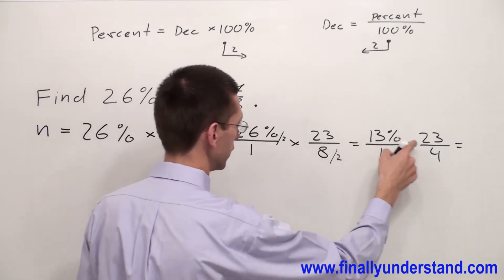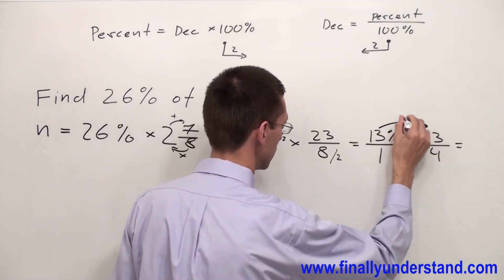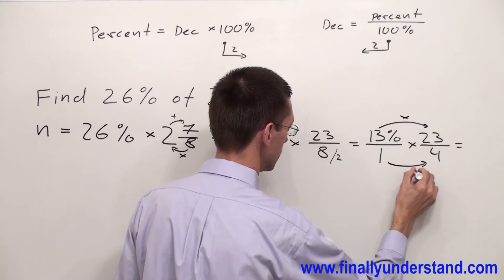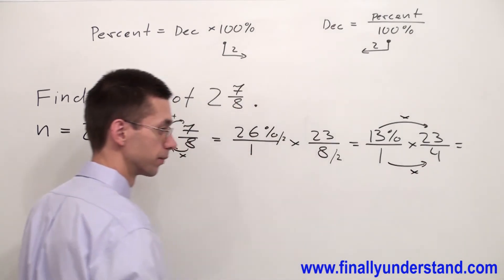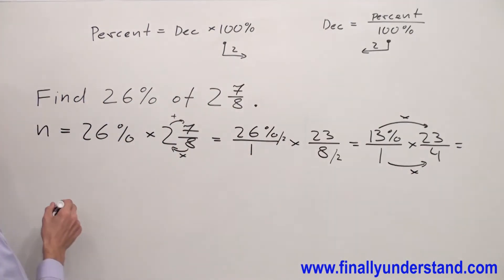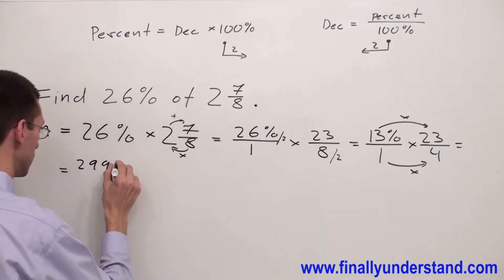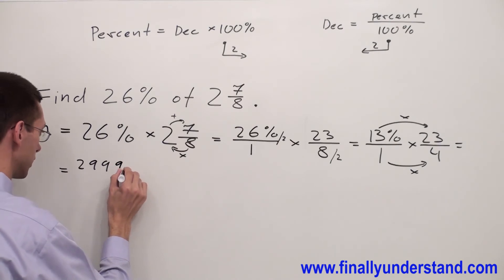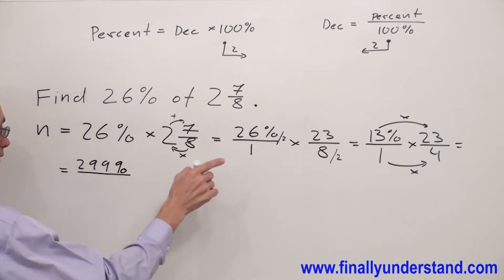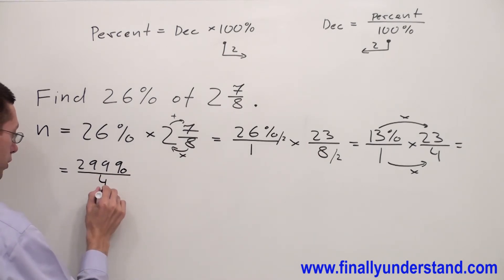Simply multiply numerator by numerator and denominator by denominator. 13 times 23 is 299, and because I multiply percent this is going to be 299%. 1 times 4 is 4.